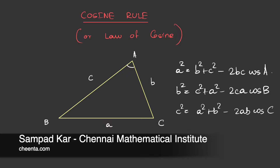The cosine rule states that given the length of two sides B and C, and angle A, we can relate this to the length of the third side A. It gives us the relation: A squared equals B squared plus C squared minus 2BC·cosA. Similarly, going in a cyclic manner, B squared equals C squared plus A squared minus 2CA·cosB, and C squared equals A squared plus B squared minus 2AB·cosC.